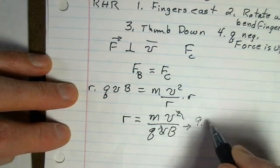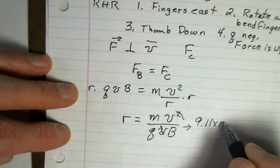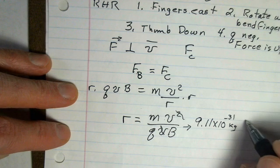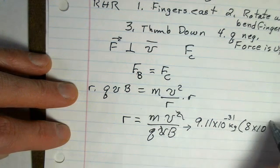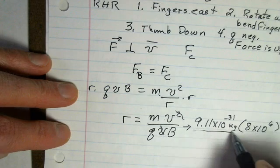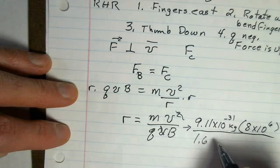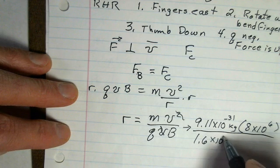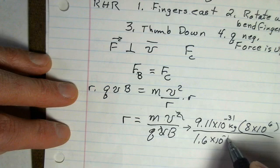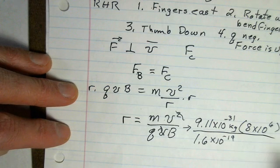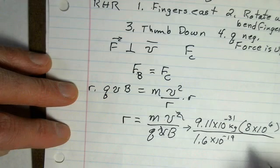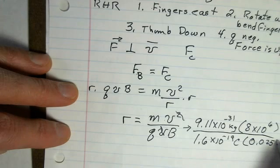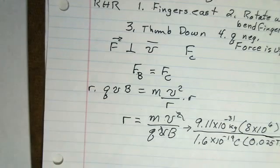Now we can use the values. We're dealing with the electron: 9.11 times 10 to the minus 31 kilograms. We're told the speed is 8 times 10 to the 6 meters per second. The magnitude of the charge on the electron is 1.6 times 10 to the minus 19 coulombs. We've already handled the negative sign by virtue of our right-hand rule. And our magnetic field is 0.025 teslas.